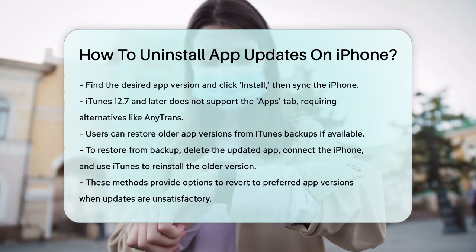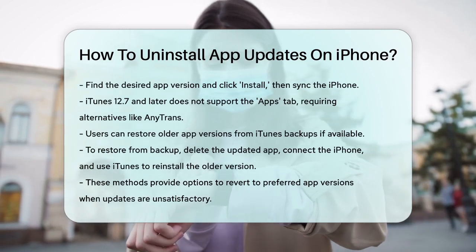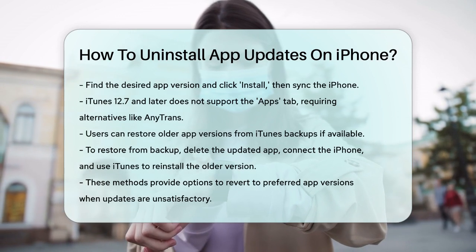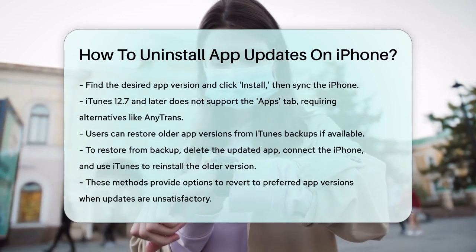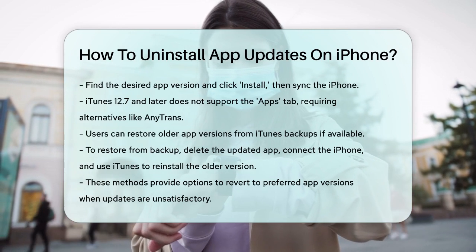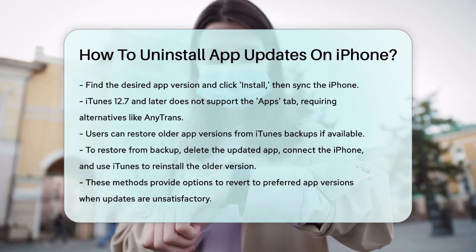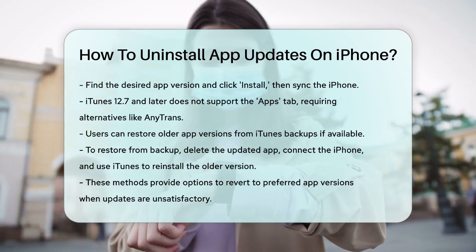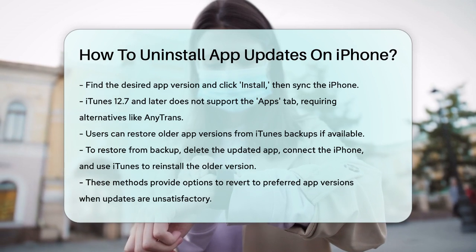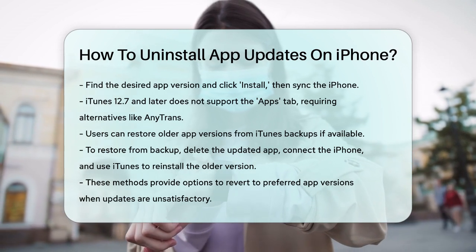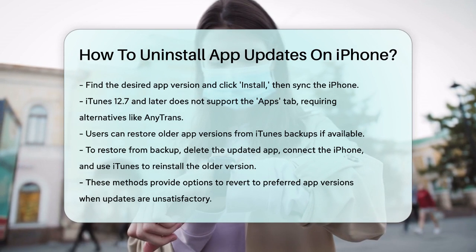Here's how. Delete the app whose update you want to undo on your iPhone. Connect your iPhone to your computer and launch iTunes. Click on the device icon, then the Apps tab, choose the app you want to restore, click Install, and then Sync to transfer it back to your iPhone. These methods give you the flexibility to manage your app updates and go back to versions that work better for you.